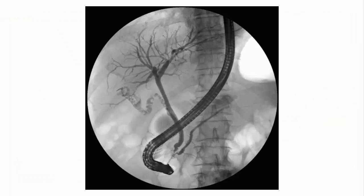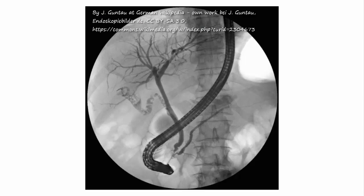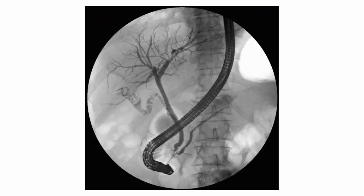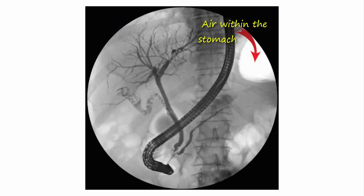This is an inverted image, like a negative of a photograph. The anatomical structures that normally appear black are appearing white, and the structures that normally appear white are appearing black — the grayscales are inverted on the image. The air within the stomach, which normally appears black, is appearing white, and the contrast medium, which normally appears white, is appearing black.